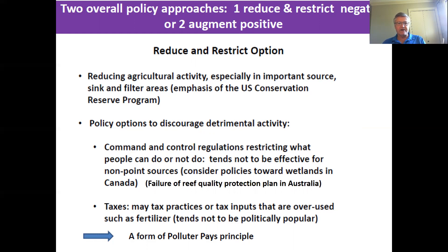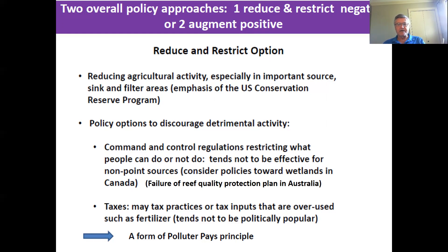We can also think about protecting sink areas — places where there is runoff into a particular area like a wetland — protecting those areas as playing a disproportionately positive role in reducing water quality problems. So we think about a landscape having different types of sources like hillsides, sinks like wetlands, and filter areas like planted vegetative strips that reduce erosion. That's really the emphasis of the United States Conservation Reserve Program, which provides incentives for farmers to reduce their use of wetlands and build up sinks and filter areas.